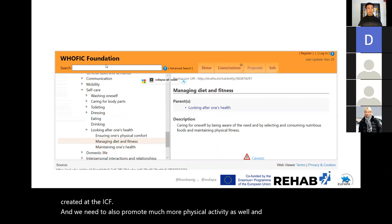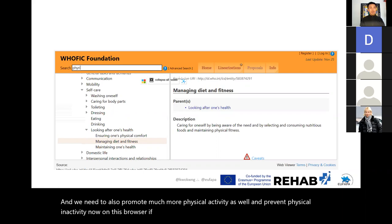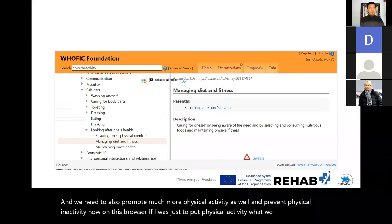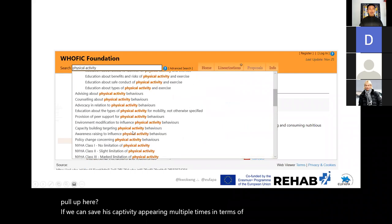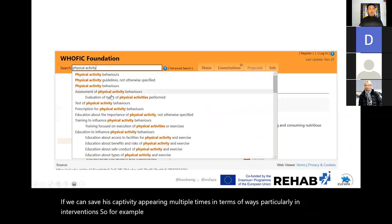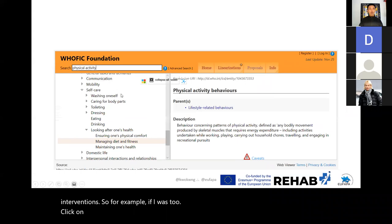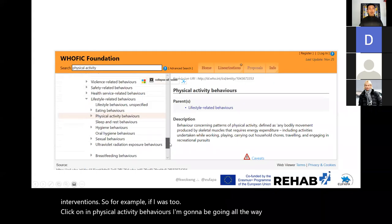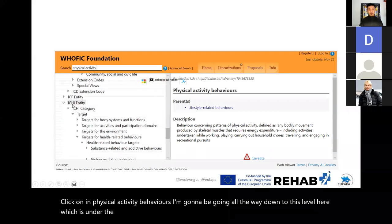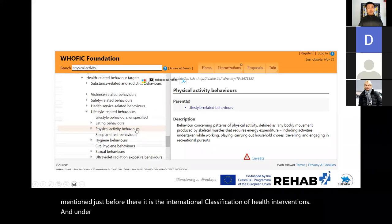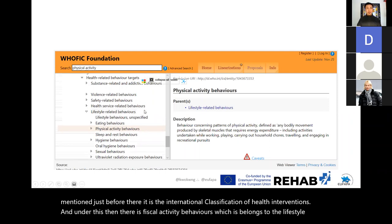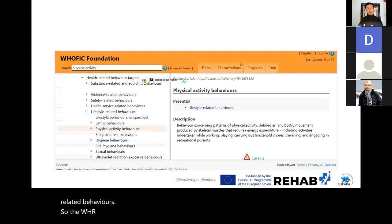On this browser, if I put in 'physical activity' we can see it appearing multiple times in terms of interventions. For example, if I click on 'physical activity behaviors,' going down under the ICHI — the International Classification of Health Interventions — there is 'physical activity behaviors' which belongs to lifestyle-related behaviors. The WHO recognizes that intervention-wise, physical activity can stand on its own, and you can see 'eating behaviors' just above it.